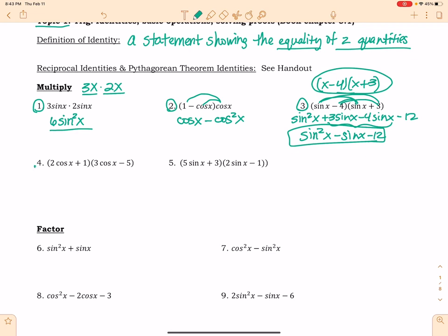We're going to do the same thing in number 4. We've got 2 cosine x plus 1 times 3 cosine x minus 5. So we're going to distribute this. That gives me 6 cosine squared x, negative 10 cosine x, 3 cosine x, and negative 5. And then I'm going to combine my like terms again.